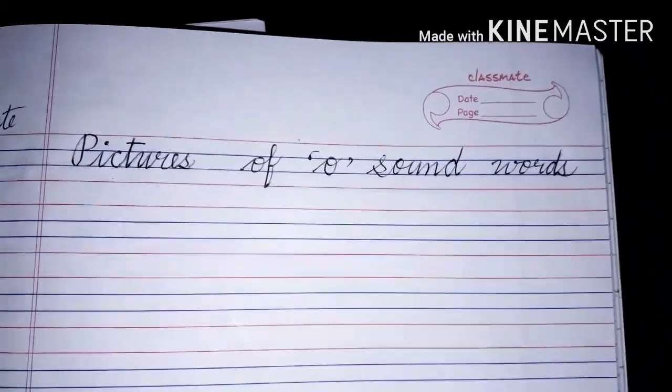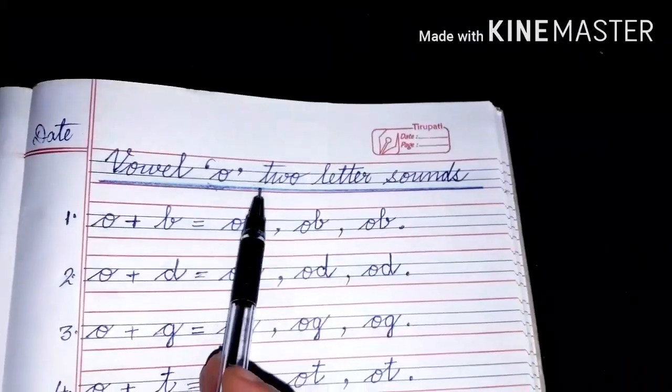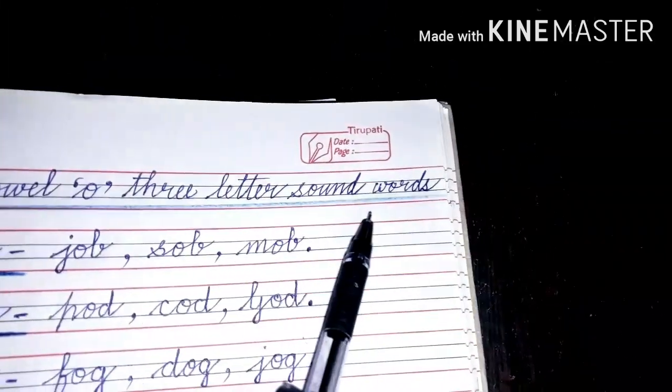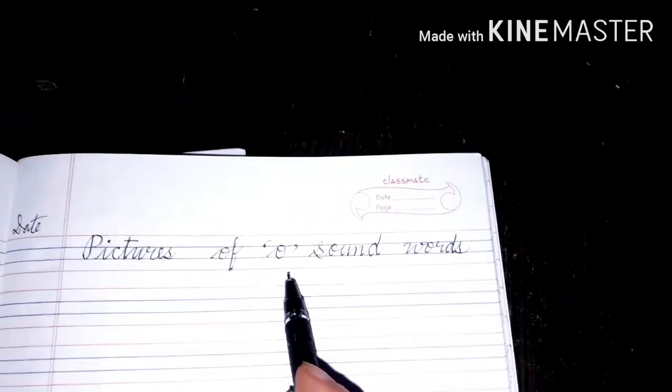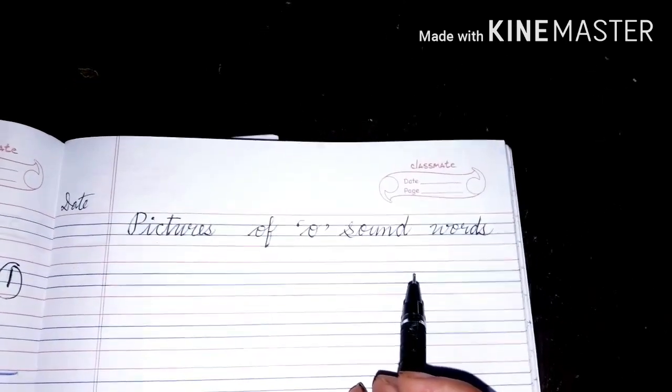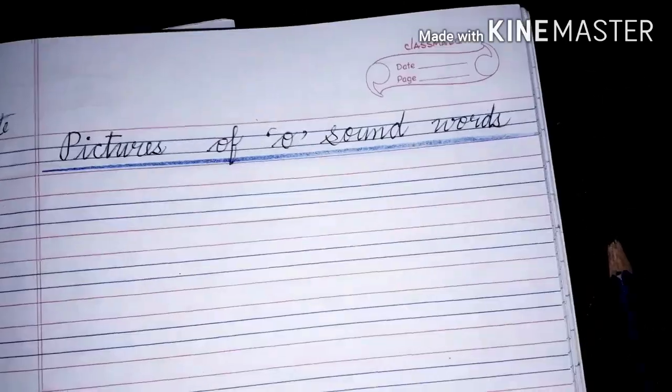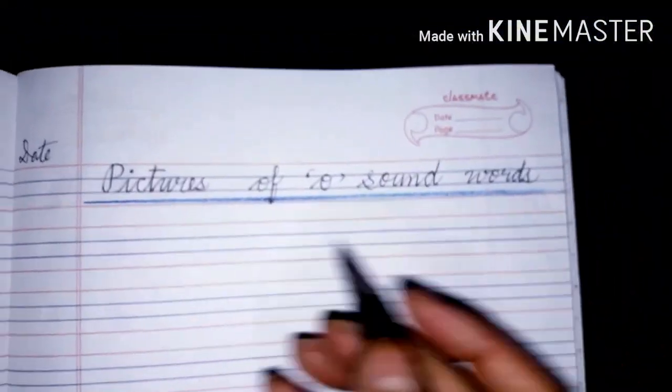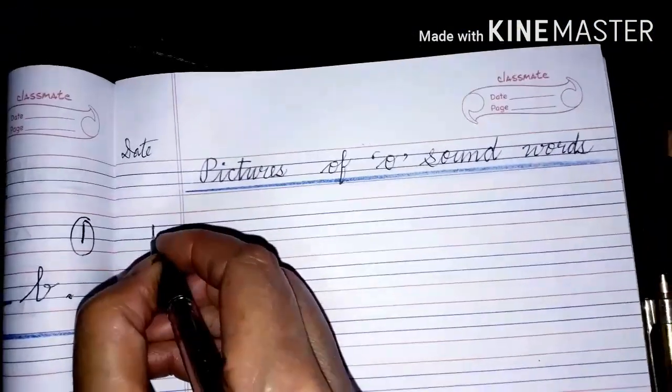Children, earlier you have done vowel O two letter sound words, then you have done vowel O three letter sound words. So today you are going to do pictures of O sound words. After writing the heading you will underline it with the blue marker pencil. I have drawn an underline here, so after drawing the underline you will start your work. Write down number one.